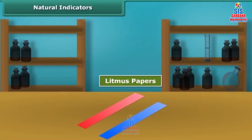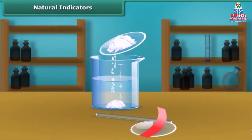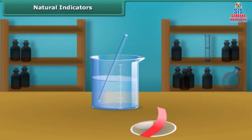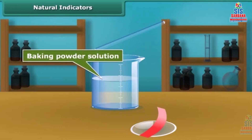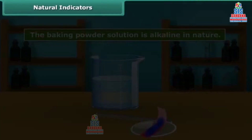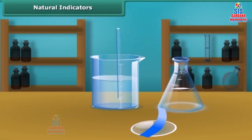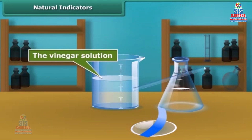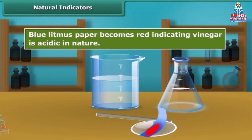Litmus is a natural indicator extracted from lichens. It has a mauve color in distilled water and is available as a solution or litmus papers. Dip a clean stirring rod into a baking powder solution and touch it to red litmus paper — it turns blue, indicating the solution is alkaline. Dip a clean stirrer into vinegar and place one drop on blue litmus paper — it turns red, indicating vinegar is acidic in nature.